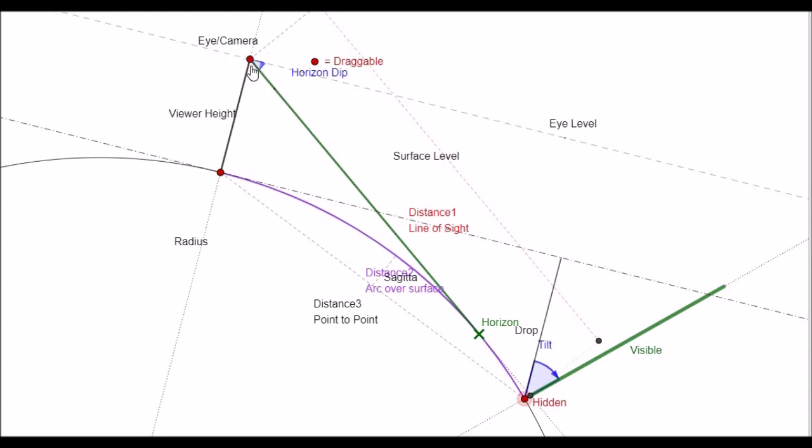So if we call this camera height 37 meters and this location Kinghorn in Fife, and this is the Bass Rock and its location off the coast of East Lothian. At this particular distance and camera height, the vast majority of the Bass Rock is visible with only a small portion being hidden.